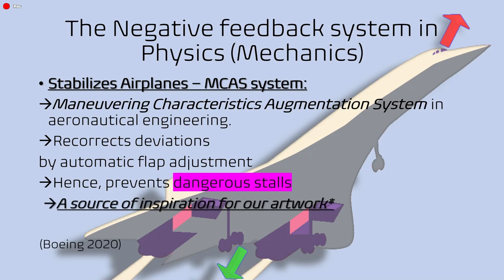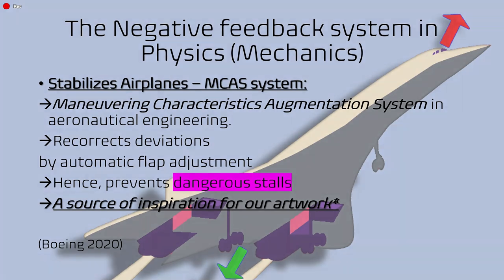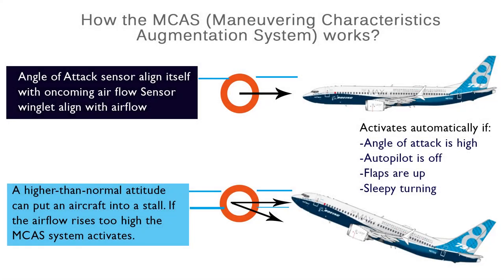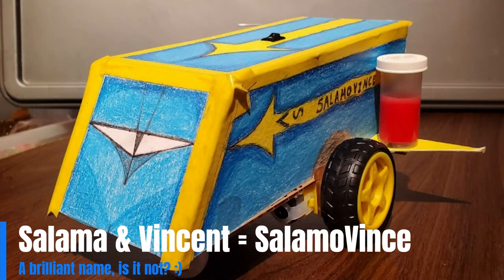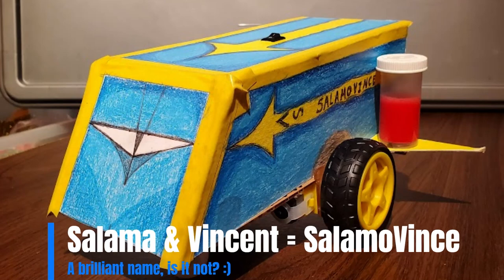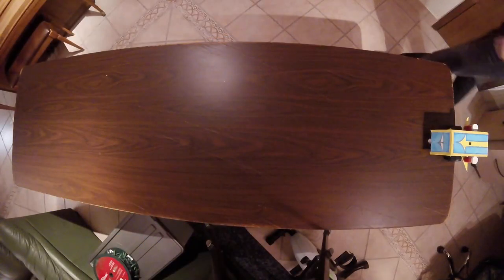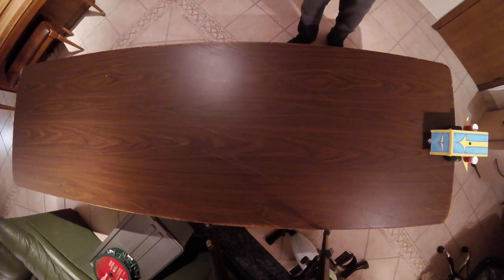It is also important to note that the MCAS system served as a source of inspiration for our artwork, which will be presented in the next slides. Being heavily inspired by the MCAS system, our artwork — the Salamo Vince Mobile — applies the same negative feedback mechanism, but not in the air, rather on the ground, for obvious reasons, one being the sheer difficulty of creating a flying robot.